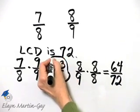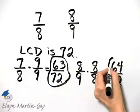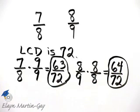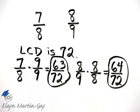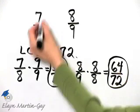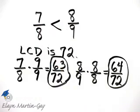Let's now look at these two fractions. Now that the denominators are the same, we can compare numerators. Well, 63 is less than 64, so 7/8 is less than 8/9.